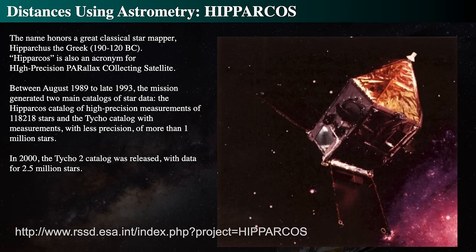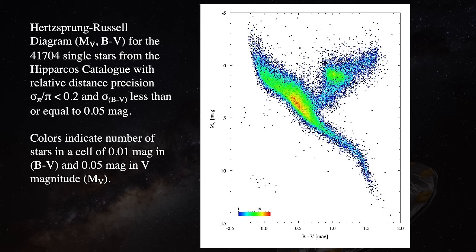To help answer that central question, the Hipparcos satellite was launched in 1989 by the European Space Agency and operated until 1993. It made a catalog of over a million stars with high-precision parallaxes to get their distances, covering brightnesses and parallax distances for up to 2.5 million stars. This is the HR diagram of 40,000 of those stars, using the Johnson filter system B−V versus absolute visual magnitude. Once you have the distance from parallax, you can get the absolute magnitude. This is called a color-magnitude diagram.